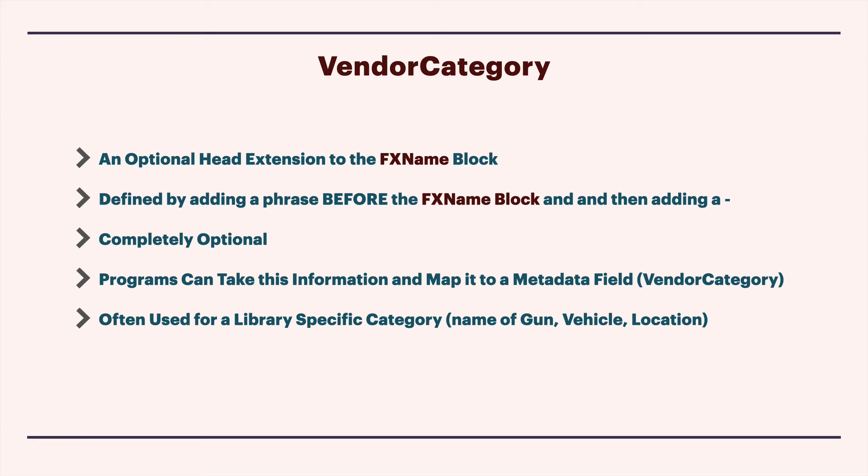Vendor category is the vendor equivalent of user category. It's actually an extension to the head of the effects name block, defined by adding a phrase before the effects name block and then adding a dash after it - so it comes immediately after the first underscore. It's also completely optional, just like user category. Certain programs will be able to take this information, pull it out of the file name, and map it to a metadata field called vendor category. It's likely to be used by a vendor to designate internal organization for a particular library.